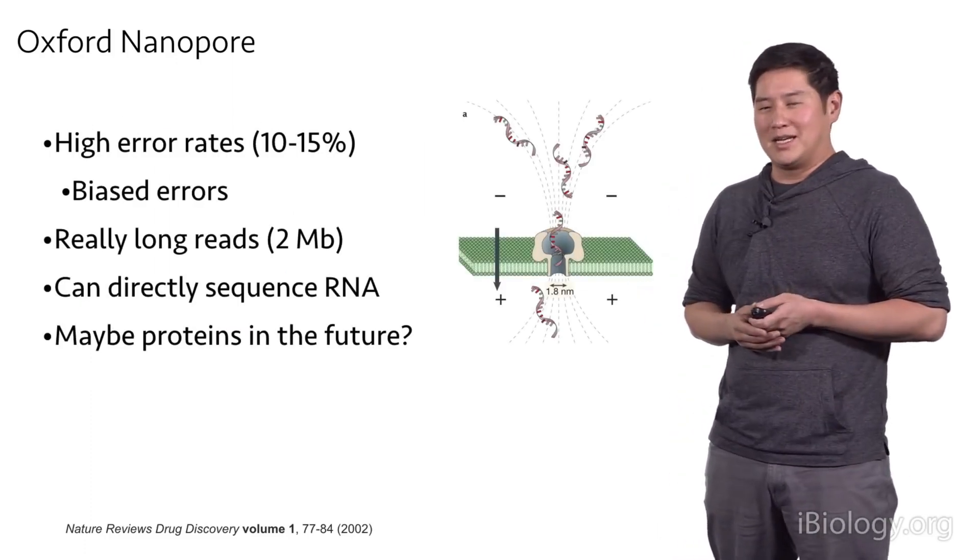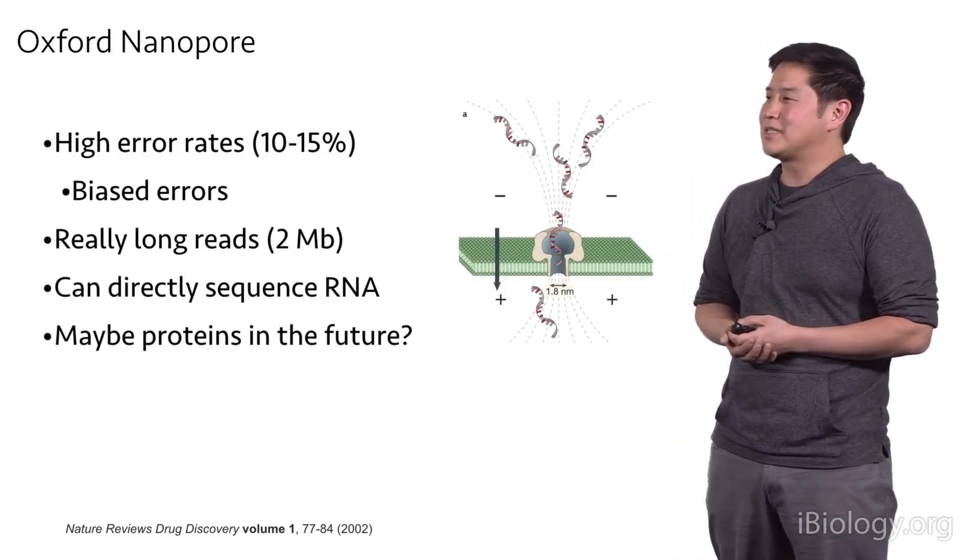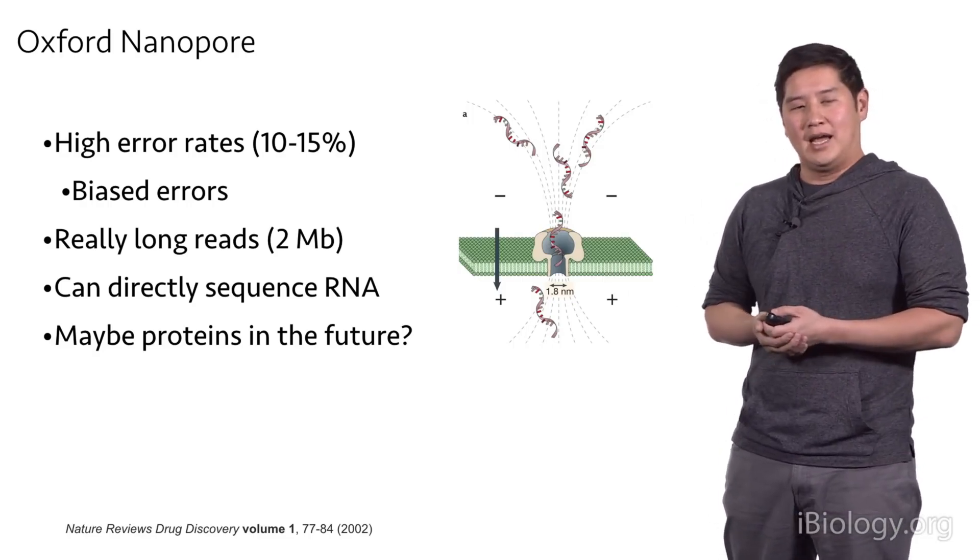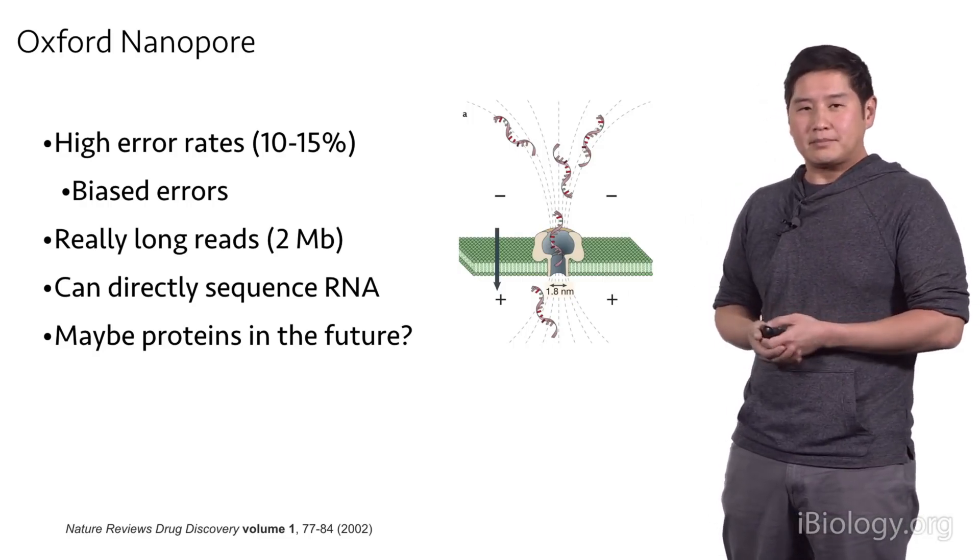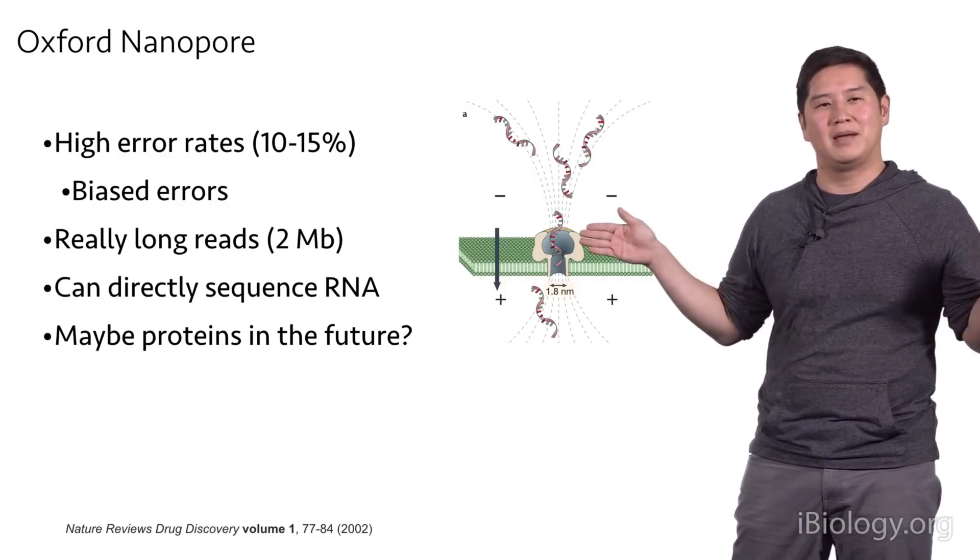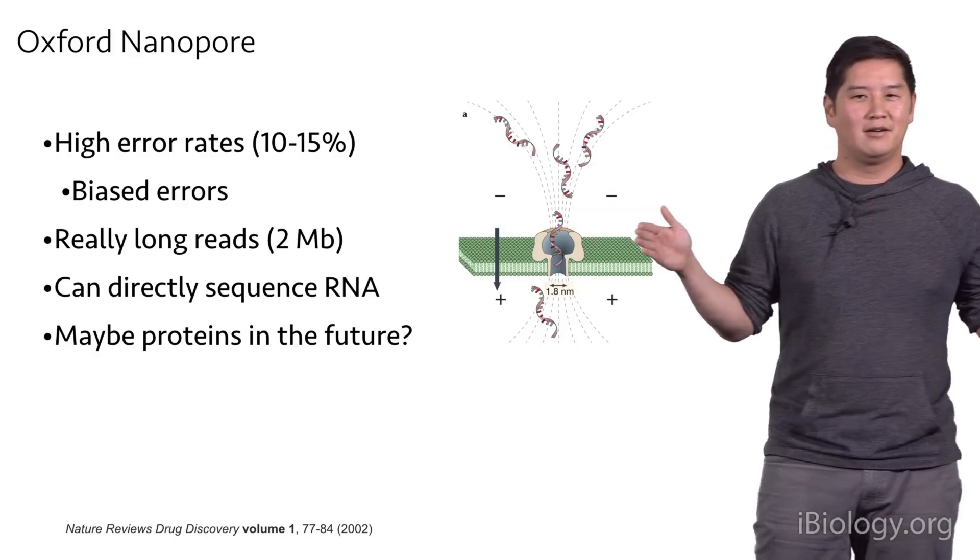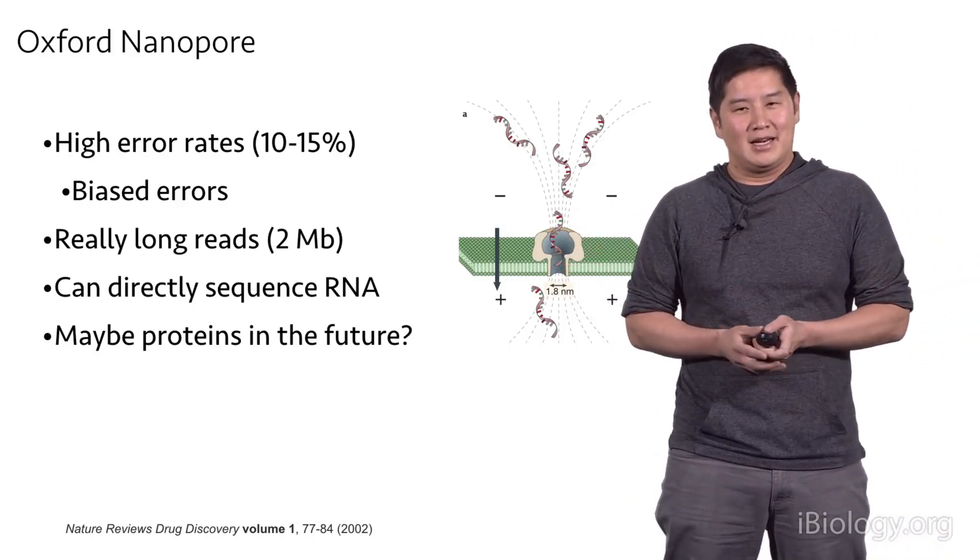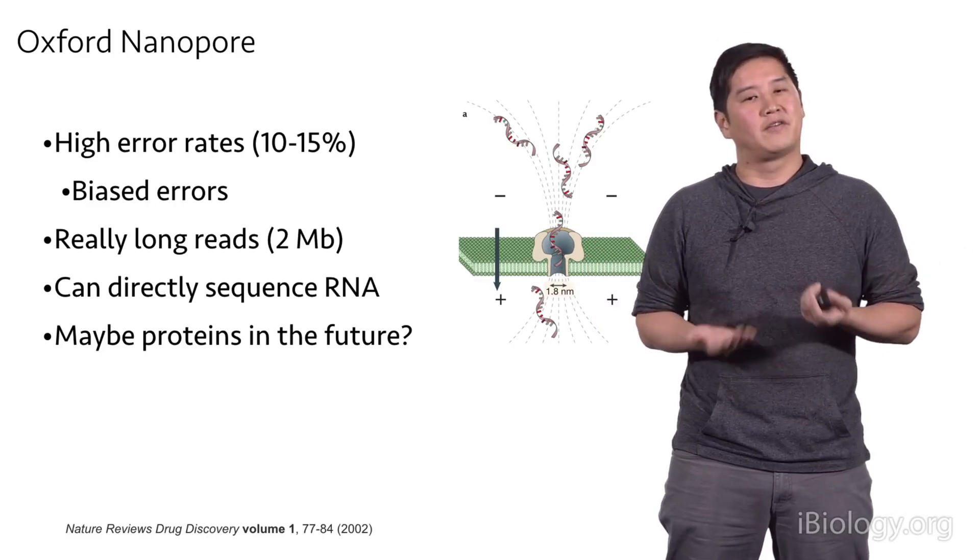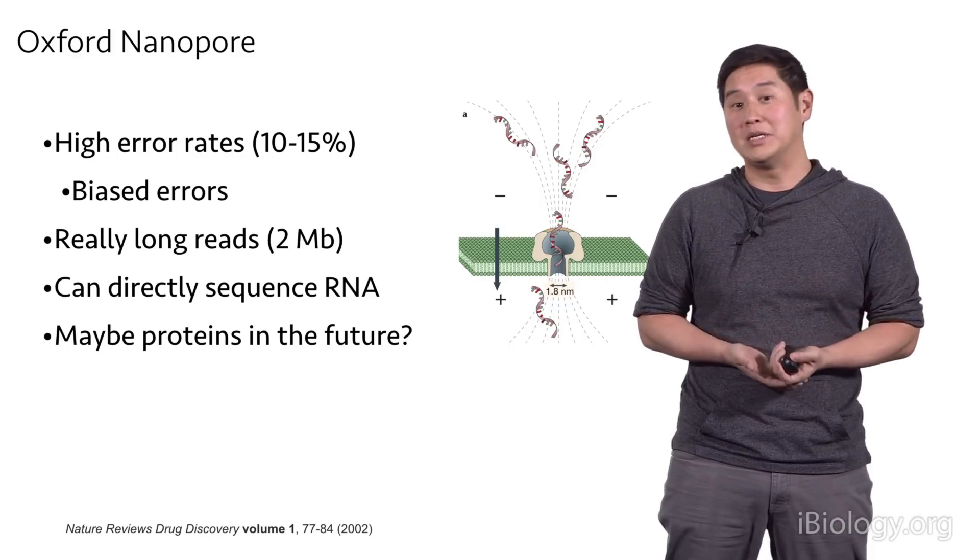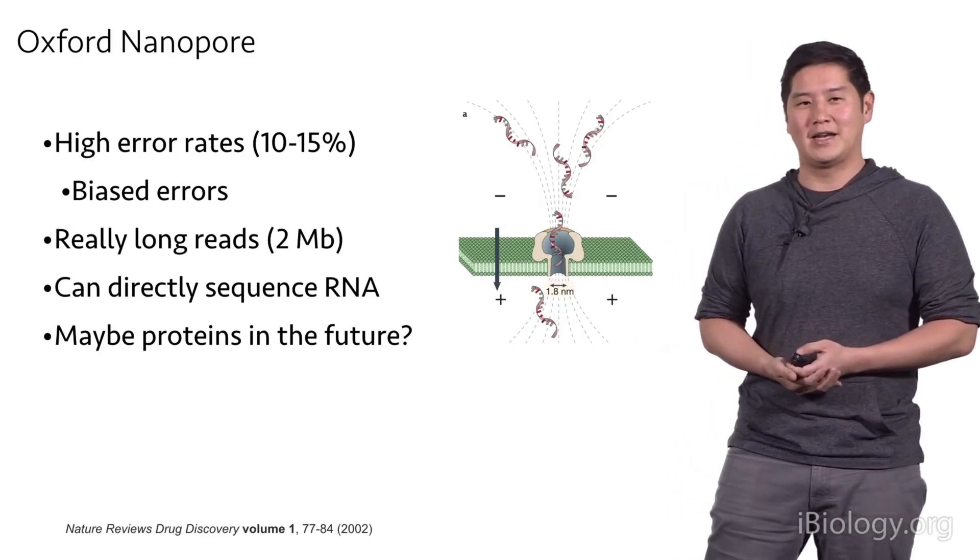But today, you can get this to work. You can buy these systems. And they do have high error rates, anywhere from 10 to 15%. And these errors tend to be biased. But you can get really, really long reads. The current record is a two megabase, or two million base read, from a single piece of DNA. And again, as I mentioned, you can now directly sequence RNA, so you don't have to convert that to DNA. And there are even possibilities of sequencing proteins in the future, which will be very exciting.